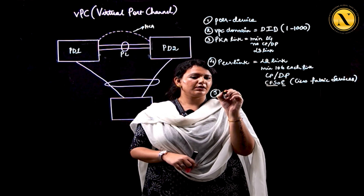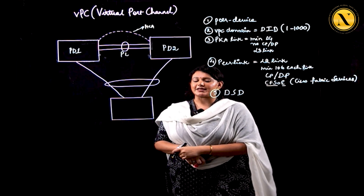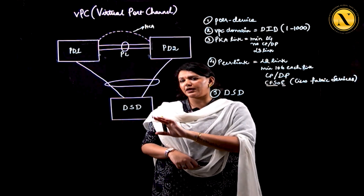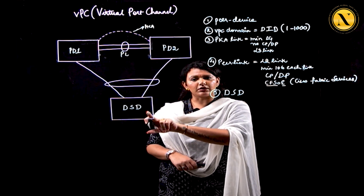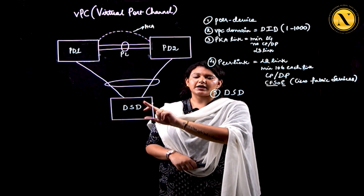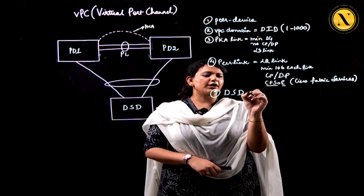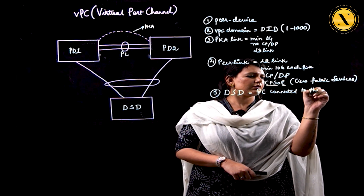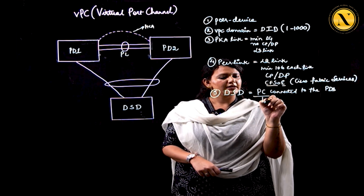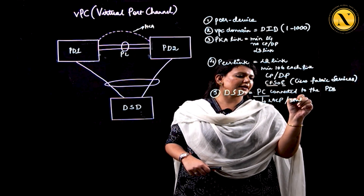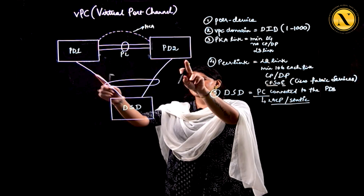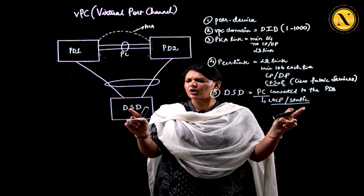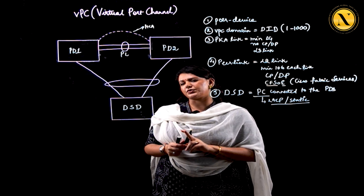Next is downstream device. The downstream device can be absolutely any device — a router, a switch, catalyst devices, a server, or storage devices. The only criteria is that it must be port channel connected to the peer devices, and the port channel must support LACP or static port channel, as these are the only two modes supported by Nexus. PAGP is not supported. If a device is dual connected but not aggregated into a port channel, it is not considered a downstream device.